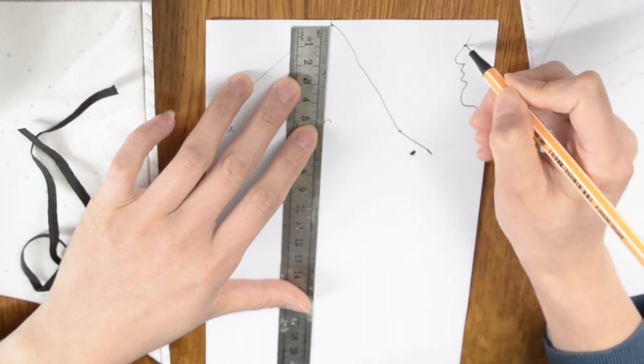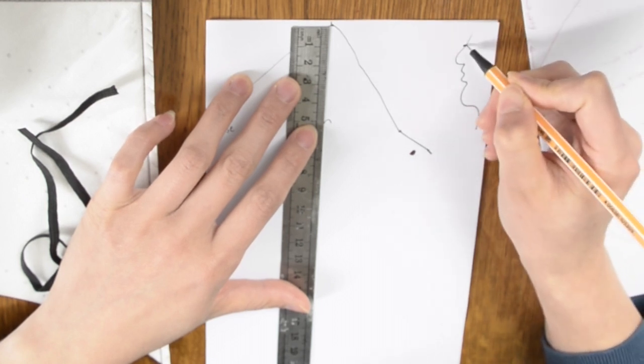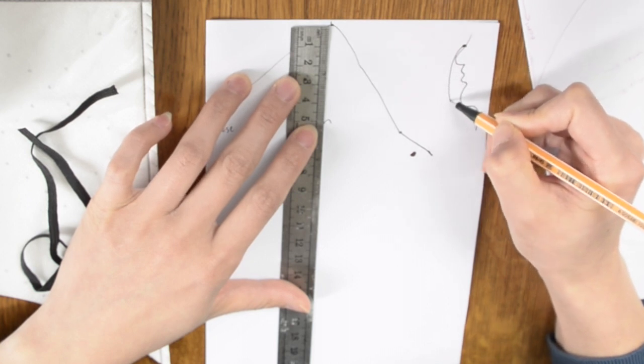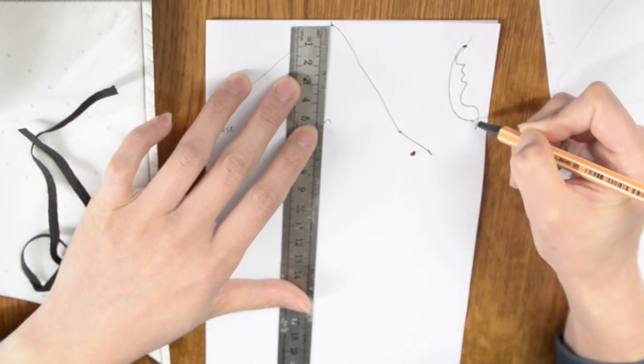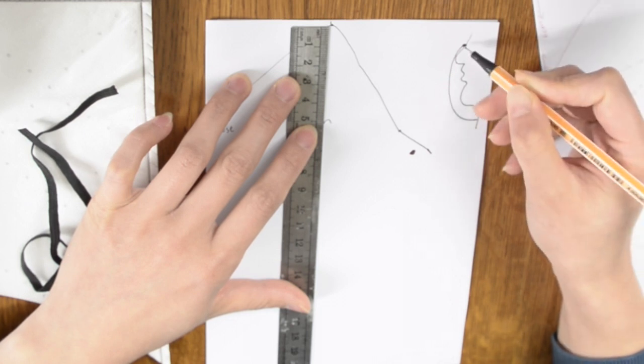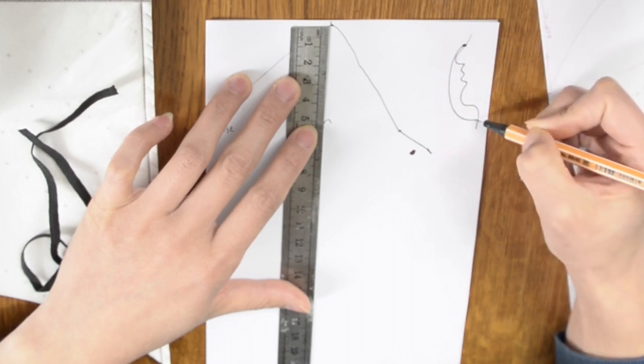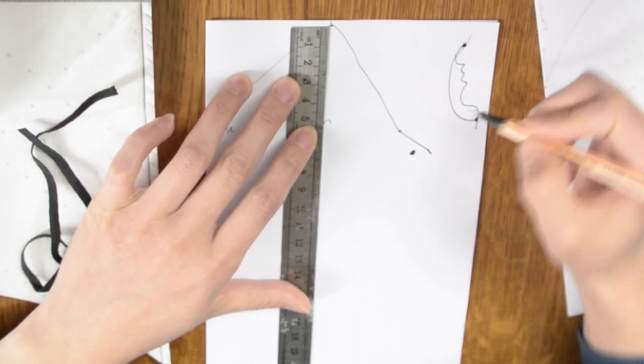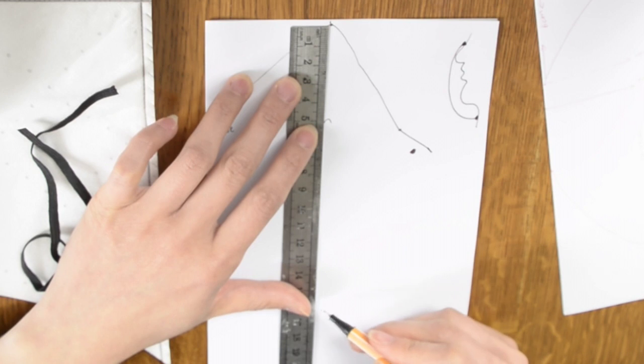So the face mask basically covers from the middle of the nose and you take a measuring tape, start from here and go all the way to cover definitely under the chin. So give a tiny bit more space under your chin. So that's the length you need from there to there.